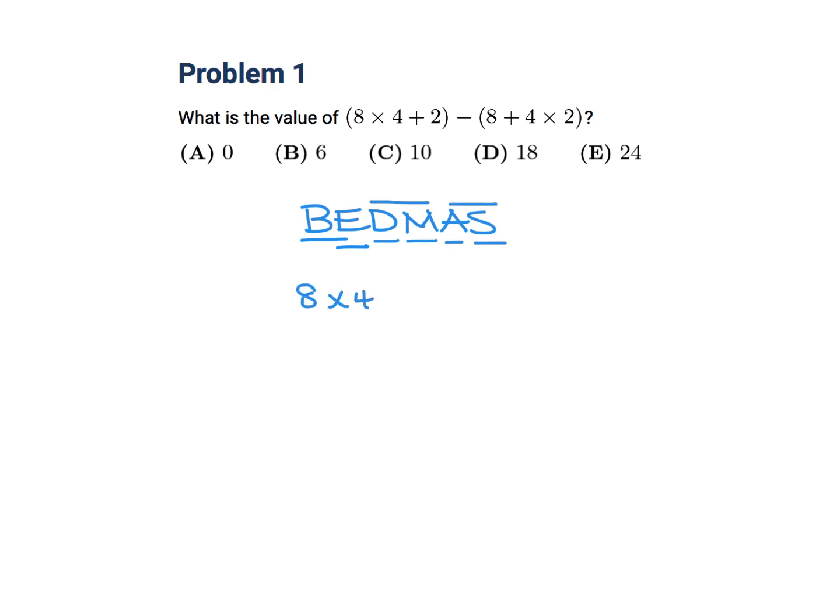So we have 8 times 4 plus 2 and then we have 8 plus 4 times 2. So the multiplication goes first so 32 plus 2. In this one the multiplication would go first so it would be 8 plus 8. And then this is 34 and this is 16 and 34 minus 16 is 18 so the answer would be D.